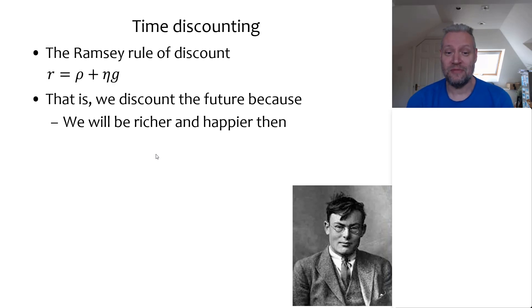The Ramsey rule of discount holds that the consumption rate of discounting r equals the pure rate of time preference ρ plus the growth rate of consumption g times the curvature of the utility function or the rate of risk aversion η, the relative rate of risk aversion. This follows from a mathematical analysis, essentially an Euler equation. But it's also fairly intuitive and it can be shown graphically.